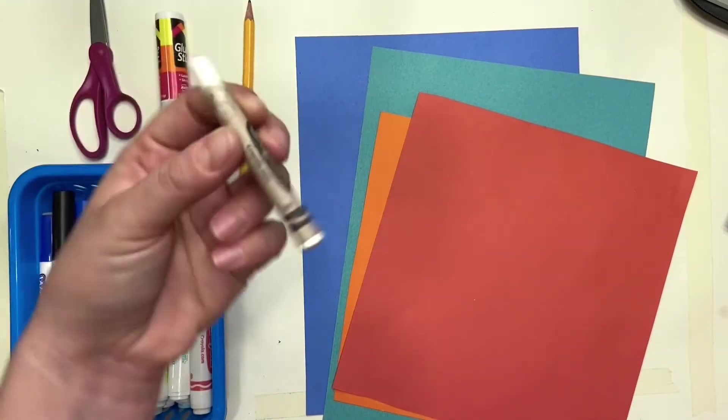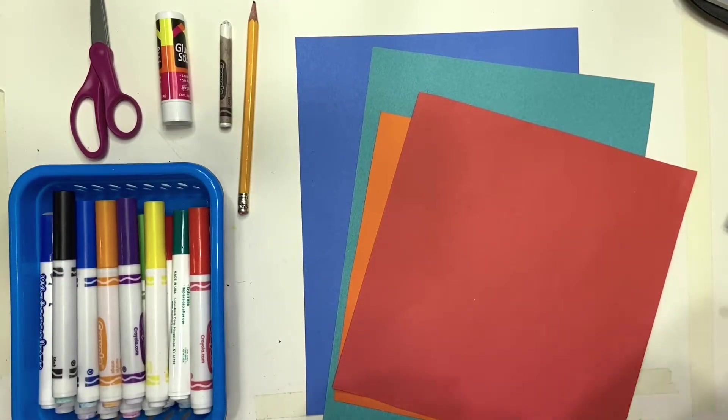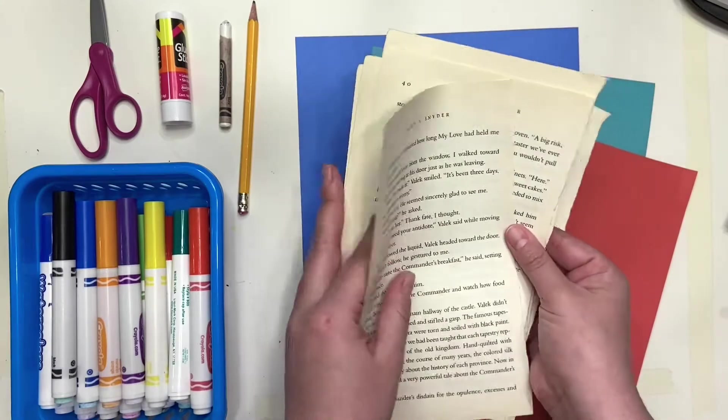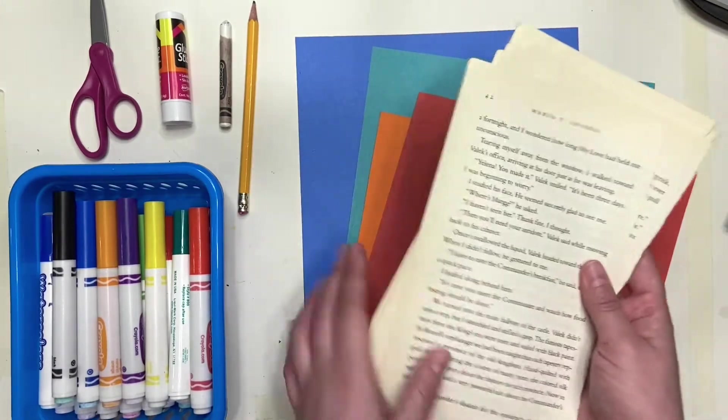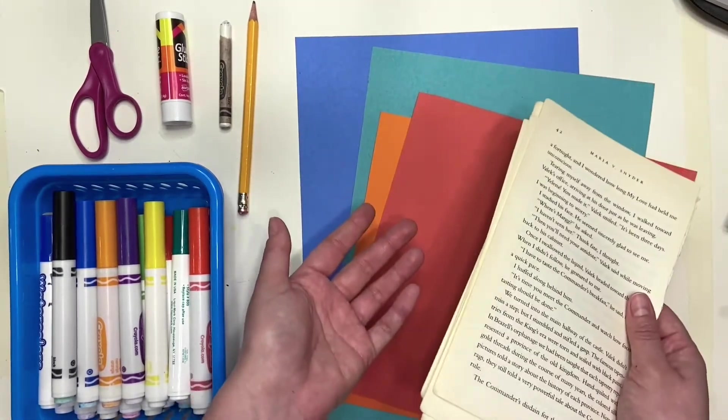As well as a white crayon to add some highlights and details. For the background, I also have this book that I had an extra, so I'm using this as the background. But if you have newspaper or magazines, you can also use that as well.